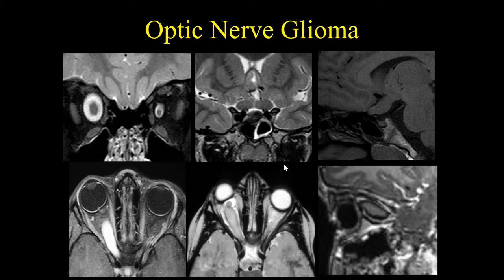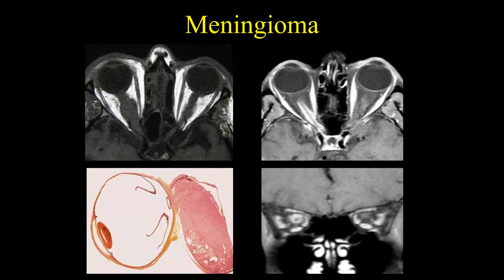When we see optic nerve glioma, we obviously have to think of neurofibromatosis type 1. I want to emphasize: steer away from intraconal versus extraconal. If you understand the anatomy of this area — the muscles, the nerve, the surrounding CSF, and the dura — then you can be much more specific with your diagnosis and not have to give a laundry list.